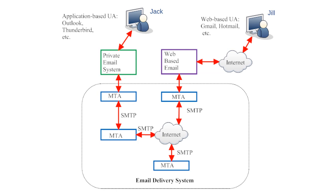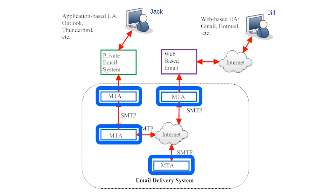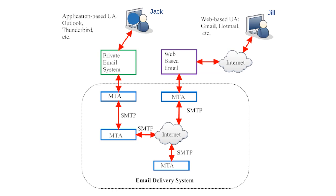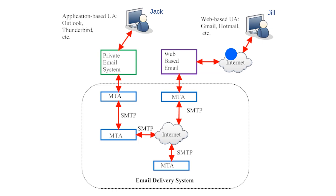So Jack writes an email and sends it off through the internet. Jack's email must travel from his private email system through a series of servers called Message Transfer Agents, or MTAs, before it can reach its destination — Jill on the right side of the page. Jack composes his message in his user agent, and when he hits send, the user agent sends the email to the first MTA. That MTA sends the email to another MTA, which sends it through the internet to a third MTA. The final MTA stores the message until Jill's web-based user agent requests access to new incoming emails. Since the user agent is web-based, the information also travels through a completely different internet path between the user agent and Jill's computer.